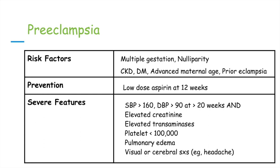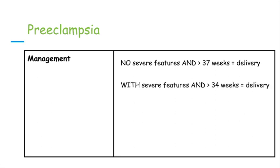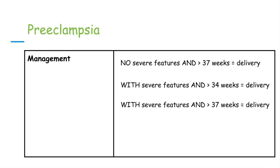The management of preeclampsia is dependent on gestational age and the presence or absence of severe features. If there are no severe features and greater than 37 weeks gestation, the treatment is delivery. If there are severe features present and greater than 34 weeks, the treatment is delivery. If there are severe features and greater than 37 weeks, the treatment is also delivery. For patients with severely elevated blood pressures, antihypertensives are also used.